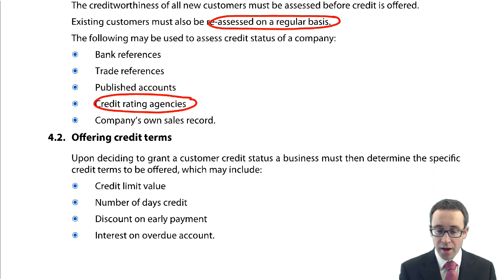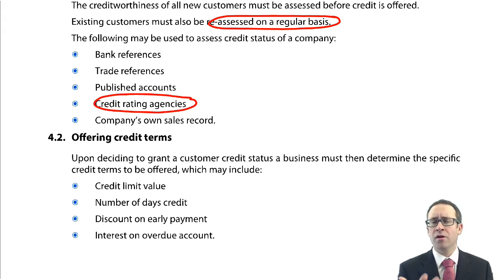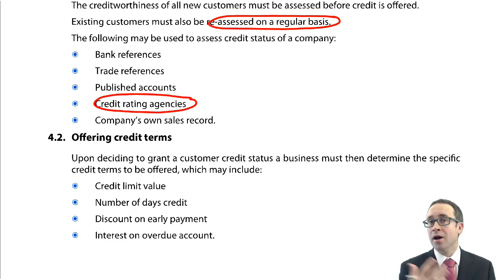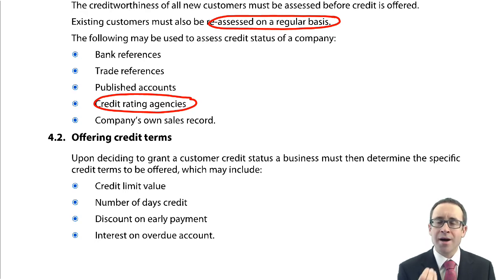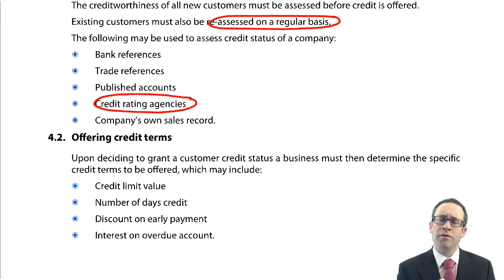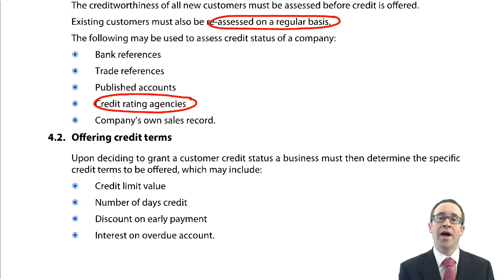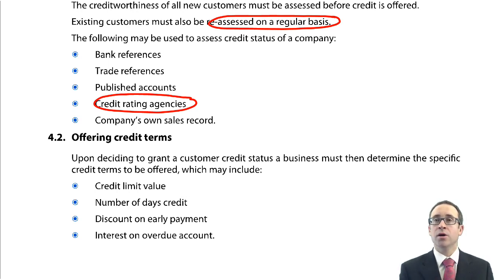In terms of credit terms, we look at the specific terms we offer. There are four things to consider. We look at the credit limit value — the maximum amount of credit sales we can offer. We don't want to offer too much because the more we offer, the greater the risk of default and irrecoverable debts, thus reducing our profitability.